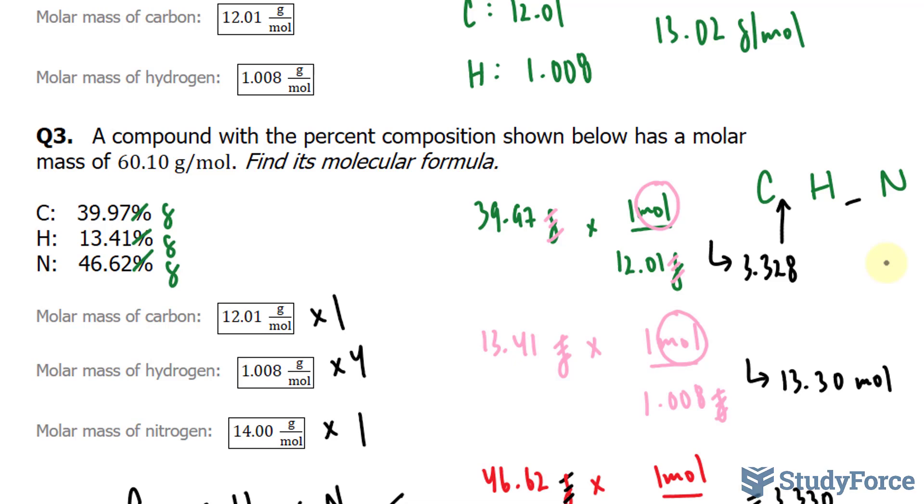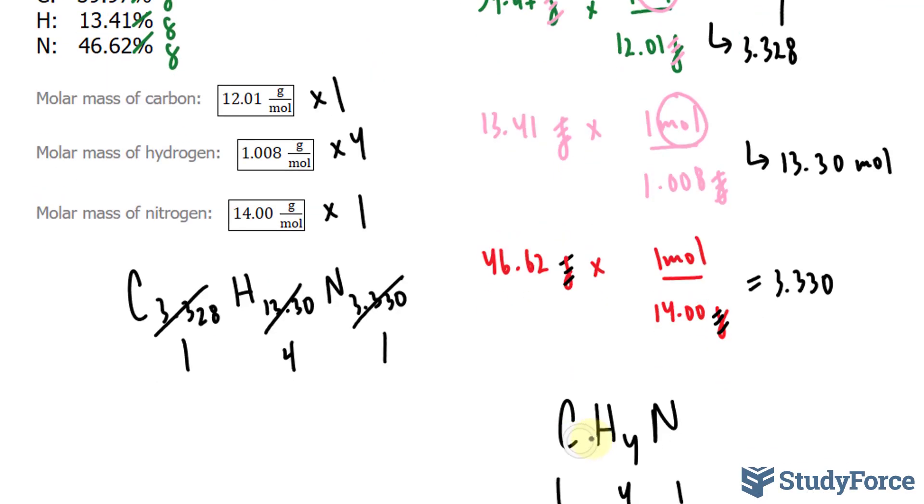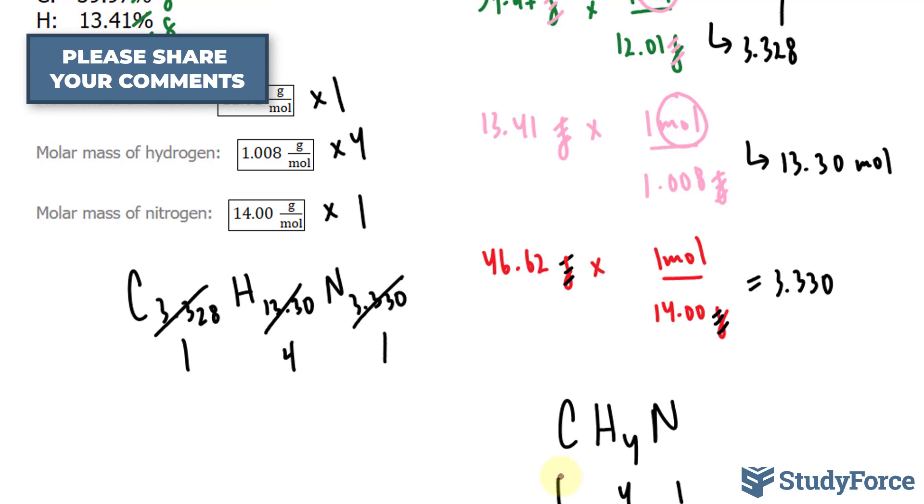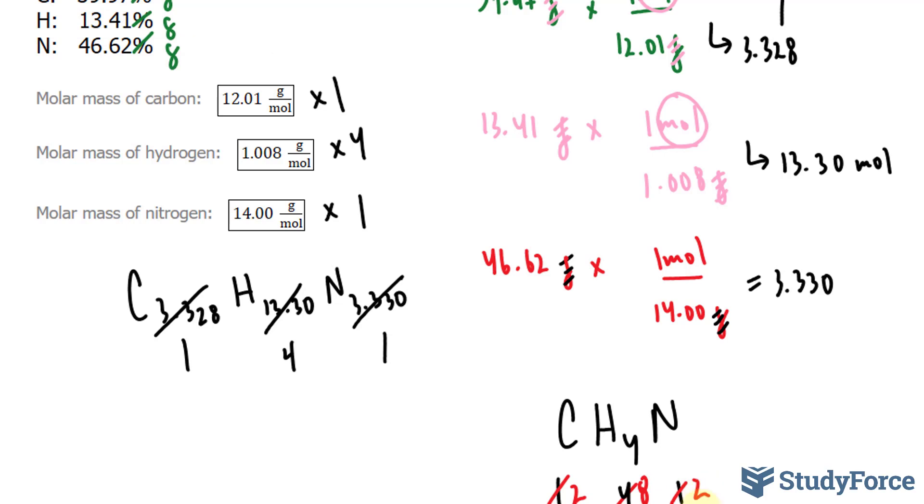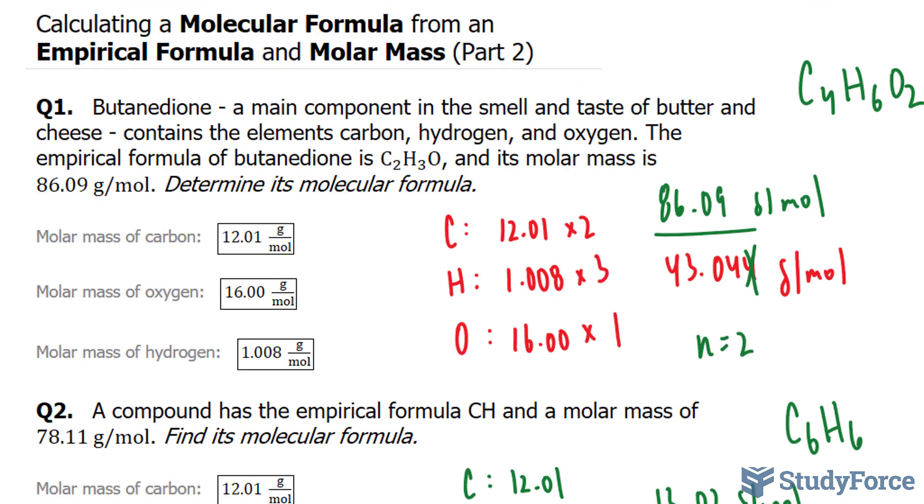This factor 2, I will multiply each of these subscripts. So multiplying this by 2, I get 2, multiplying this, I get 8, and multiplying this, I get 2. Therefore, my unknown compound has the actual molecular formula of C2, H8, and N2. And there you have it. That is how to calculate molecular formula from an empirical formula and molar mass.